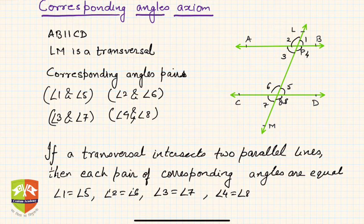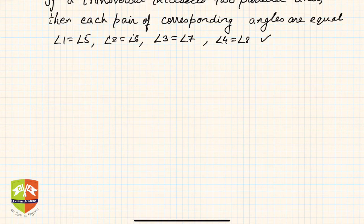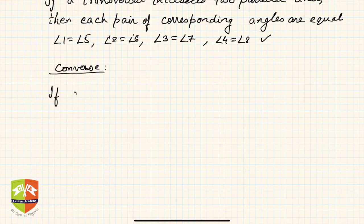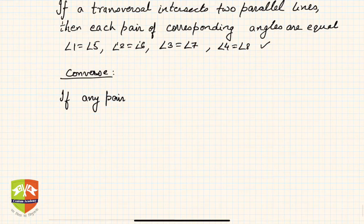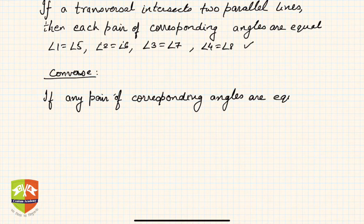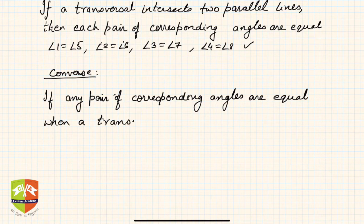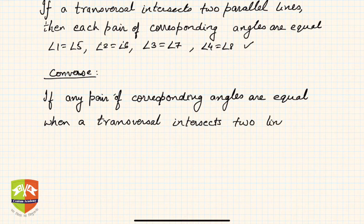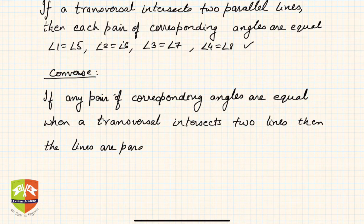This statement's converse is also true. The converse says: if any pair of corresponding angles are equal when a transversal intersects two lines, then the lines are parallel. We don't need to check all four pairs — just any one pair. This converse is also an axiom.